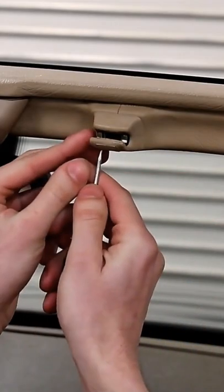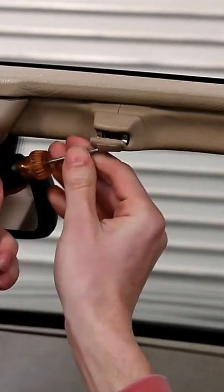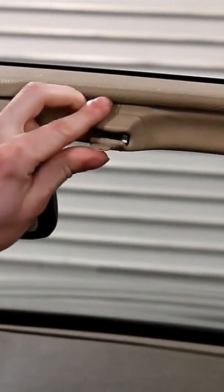With that screwdriver, simply pry open this flap on the SunVisor clip that is already on the vehicle. This is the easiest way to do that. Once it's open, leave it open and locate the screw behind the flap.